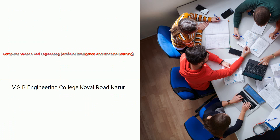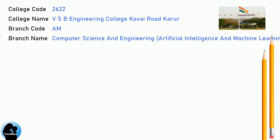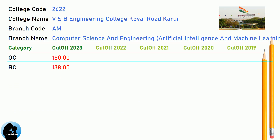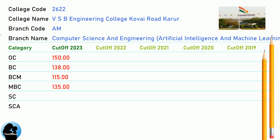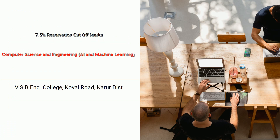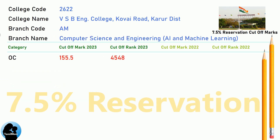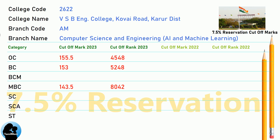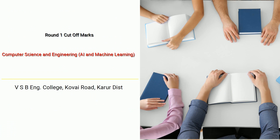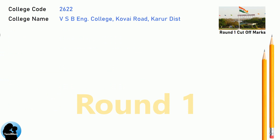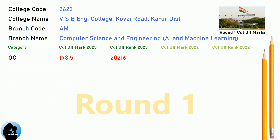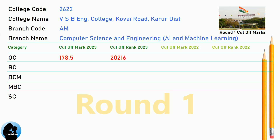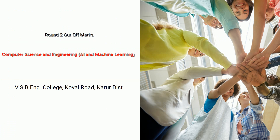DNA Cut-Off for VSB Engineering College in Computer Science and Engineering Artificial Intelligence. DNA 7.5 Reservation Cut-Off for VSB Engineering College in Computer Science and Engineering. DNA Round 1 Cut-Off for VSB Engineering College in Computer Science and Engineering, AI and Machine Learning. DNA Round 2 Cut-Off for VSB Engineering College in Computer Science and Engineering.